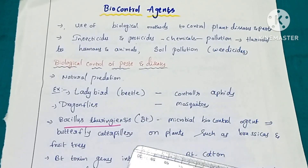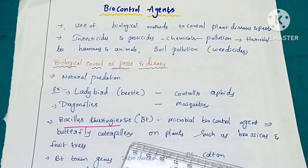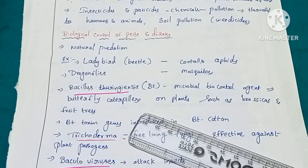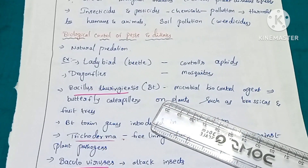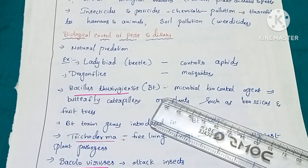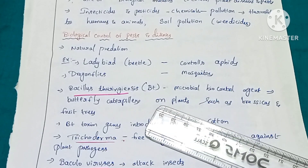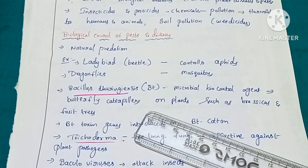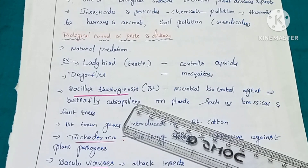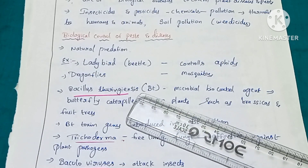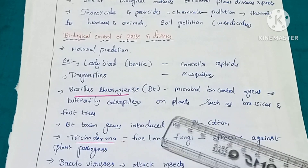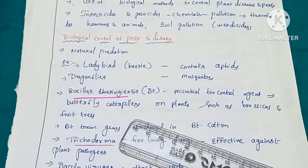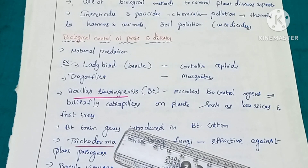There are also some bacteria that act as biocontrol agents. The bacteria is called Bacillus thuringiensis. This bacteria produces an endotoxin which has a crystal protein. Bacillus thuringiensis, under unfavorable conditions, produces spores. It is used as a biocontrol agent to control butterfly caterpillars that engulf leaves — mainly of brassica and fruit trees.